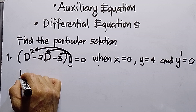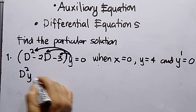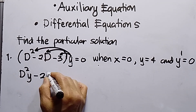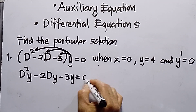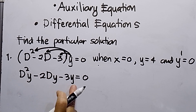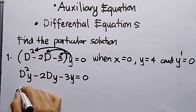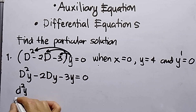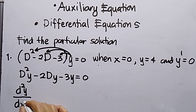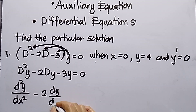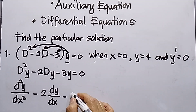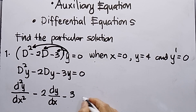First, I need to distribute this one by one. This gives d²y minus 2dy minus 3y equals zero. Then I will make this into a homogeneous linear equation: d²y/dx² minus 2 dy/dx minus 3y equals zero.